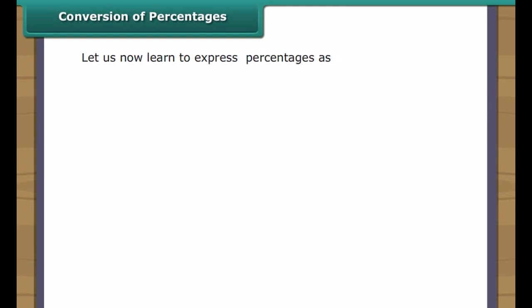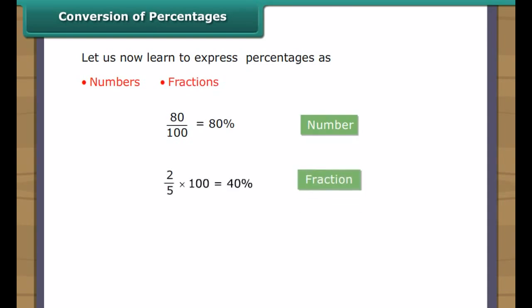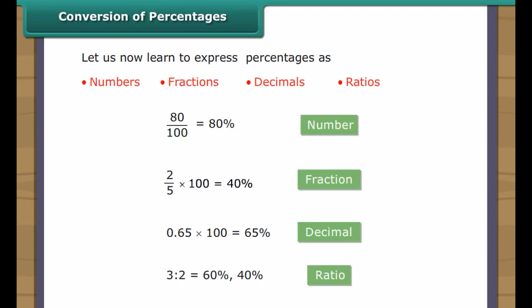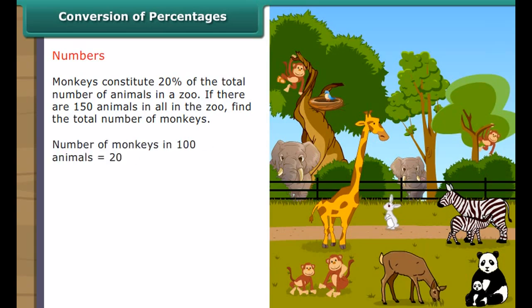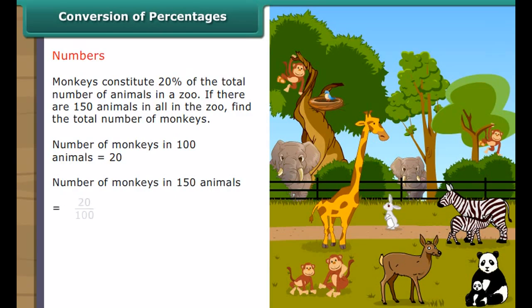Conversion of percentages. We can now express numbers, fractions, decimals and ratios as percentages. Let us learn to express percentages as numbers, fractions, decimals and ratios. Numbers: monkeys constitute 20% of the total number of animals in a zoo. If there are 150 animals in all, number of monkeys equals 20/100 into 150, which equals 30. There are 30 monkeys in the zoo.